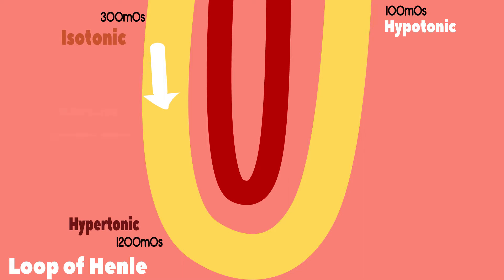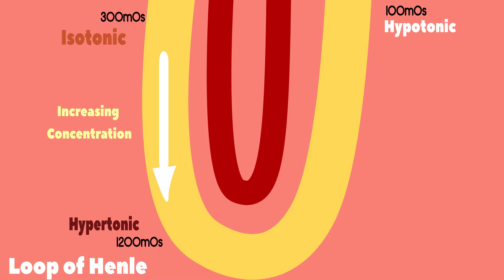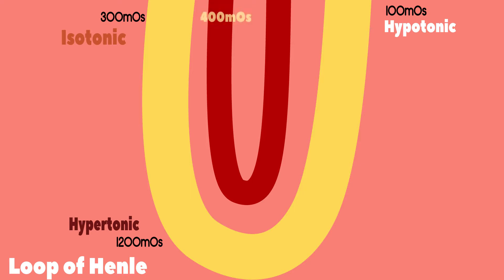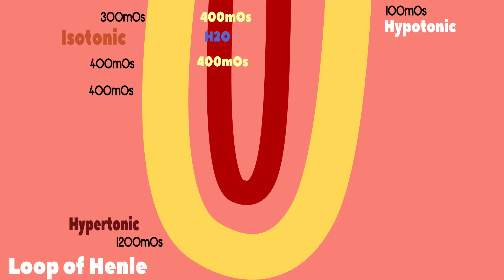As the 300 milliosmole ultrafiltrate descends deeper into the medullary layer from the proximal tubule, more concentrated interstitium is encountered. At 300 milliosmoles, the ultrafiltrate will encounter 400 milliosmole interstitium. As a result, water will diffuse out of the ultrafiltrate into the interstitium, which is more concentrated, and into the blood of the vasa recta, which is again more concentrated. The ultrafiltrate at that level becomes equally concentrated as the interstitium and as the vasa recta — approximately 400 milliosmoles — because water left and entered the blood.